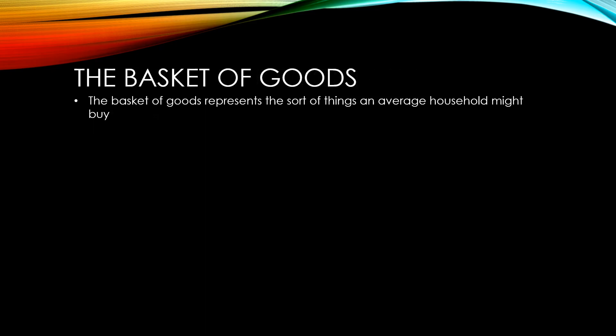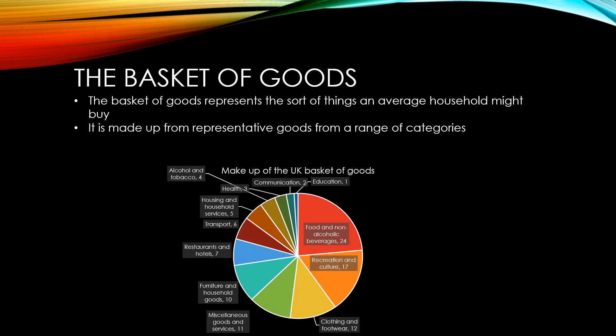The basket of goods aims to be representative of the sort of things an average household might buy. It's made up from representative goods from a range of categories. Making up 24% of the items in the basket, food and non-alcoholic beverages is by far the largest category, followed by recreation and culture and clothing and footwear.